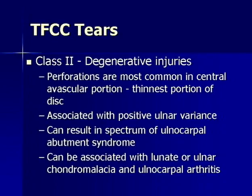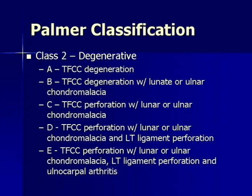Class 2 degenerative injuries: perforations are most common in the central avascular portion of the disc, which is actually the thinnest part of the articular disc. They're often associated with positive ulnar variance and can result in a spectrum of ulnocarpal abutment syndrome, including lunate or ulnar chondromalacia and ultimately ulnocarpal arthritis. The Palmer classification for degenerative tears begins with degenerative signal within the disc, progresses to chondromalacia of the lunate or ulna, followed by a perforation of the TFCC, then can include a lunotriquetral ligament perforation, and finally all three findings with secondary ulnocarpal arthritis.